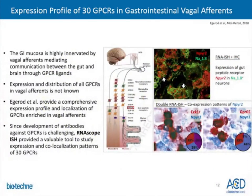The gastrointestinal mucosa is highly innervated by vagal afferents mediating gut-brain communication through GPCR ligands, but expression and distribution of all GPCRs in vagal afferents is not fully known. Researchers completed a comprehensive expression profile and spatial localization of GPCRs including novel orphan receptors enriched in vagal afferents expressing the sodium channel Nav1.8. RNA scope provided a valuable tool to study expression and co-localization patterns of 30 GPCRs. The chromogenic assay was used in combination with IHC to validate RNA-seq data, and the duplex assay determined distribution of GPCRs in the mucosa or muscularis using CCK1R as a marker for vagal afferents innervating the muscularis and GPR65 for those innervating the mucosa.